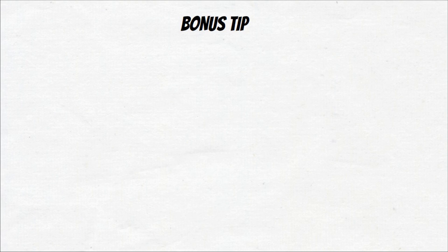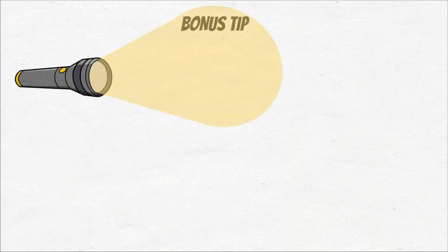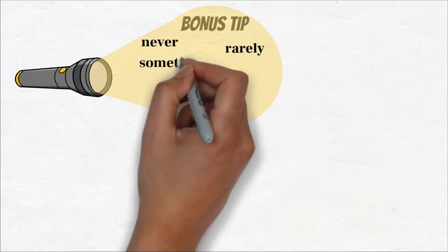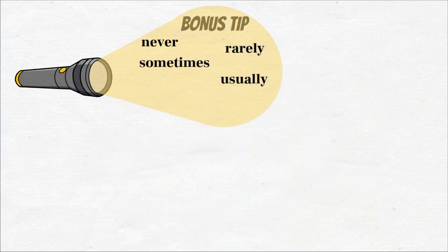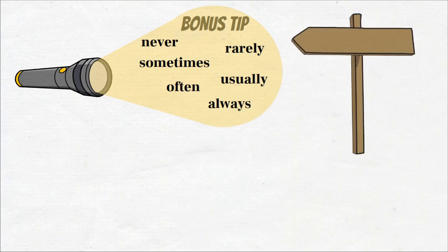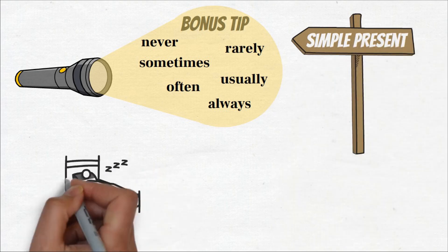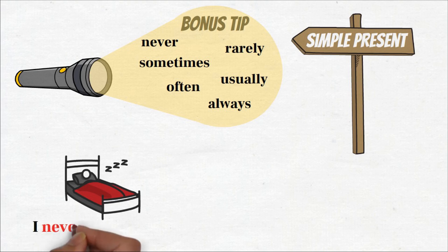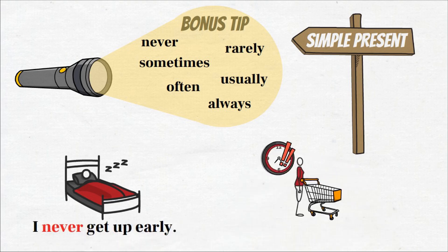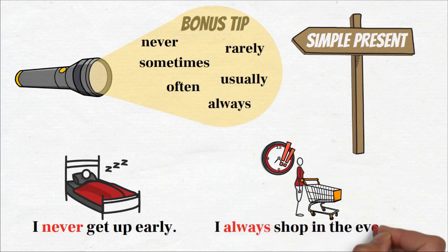Bonus tip. Sometimes you may see these words: never, rarely, sometimes, usually, often, or always. This is a sign that the sentence is a simple present tense sentence. For example: I never get up early, or I always shop in the evening.